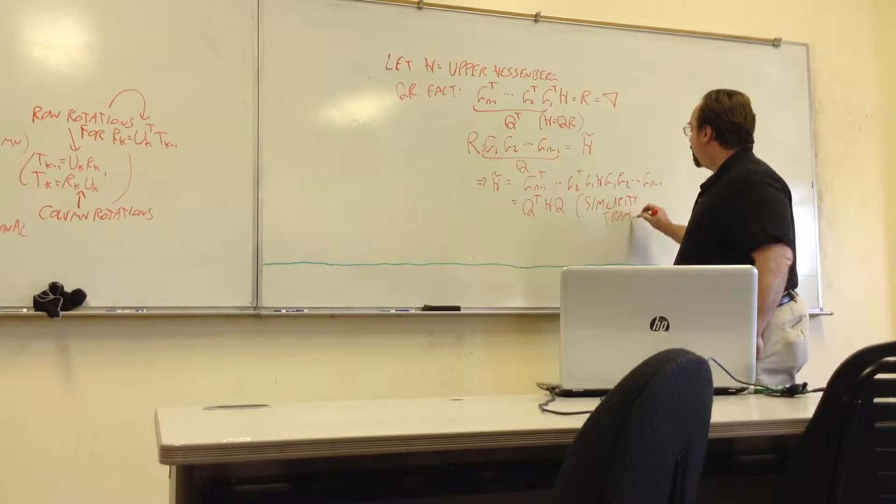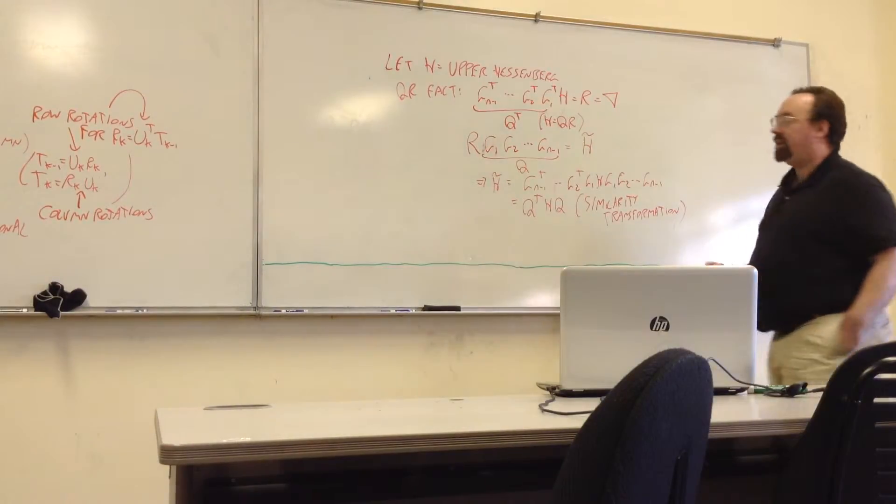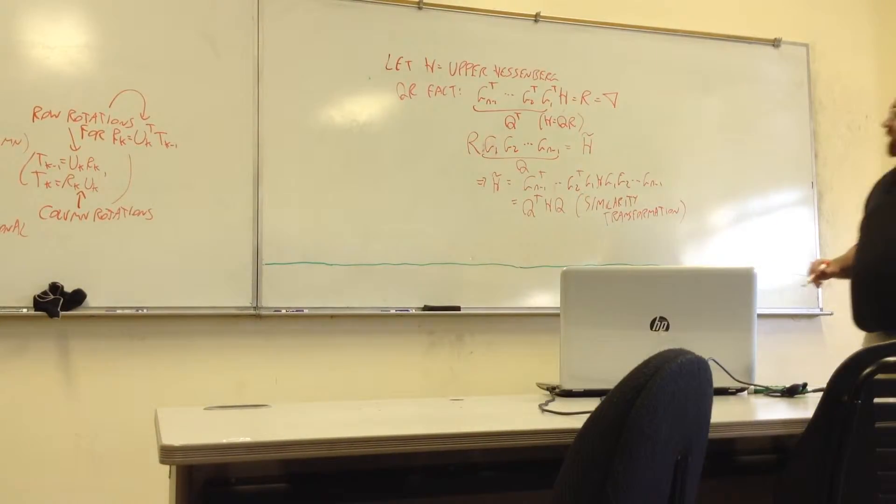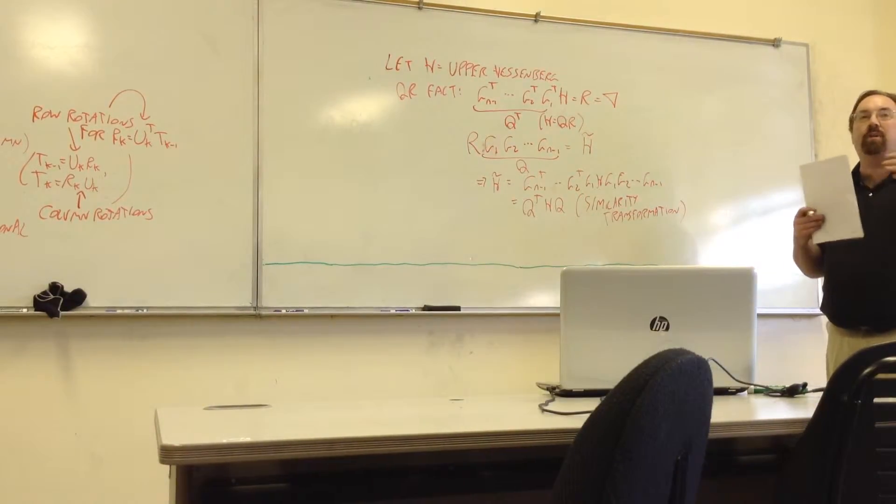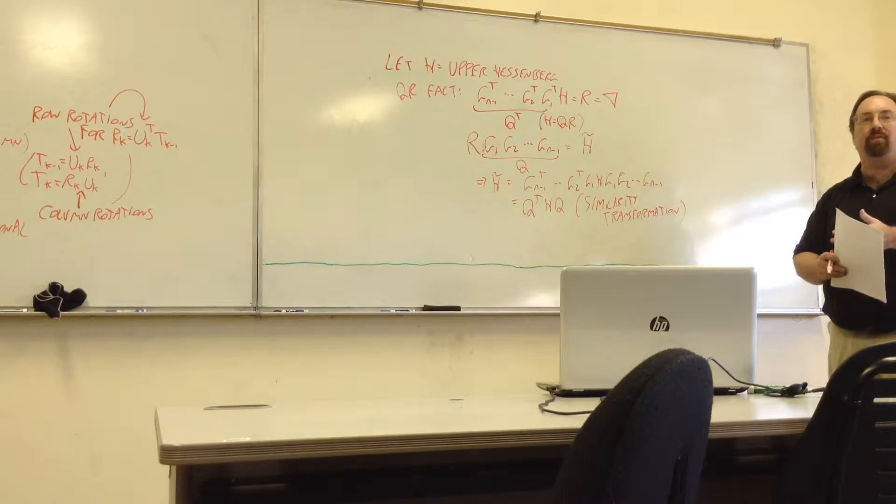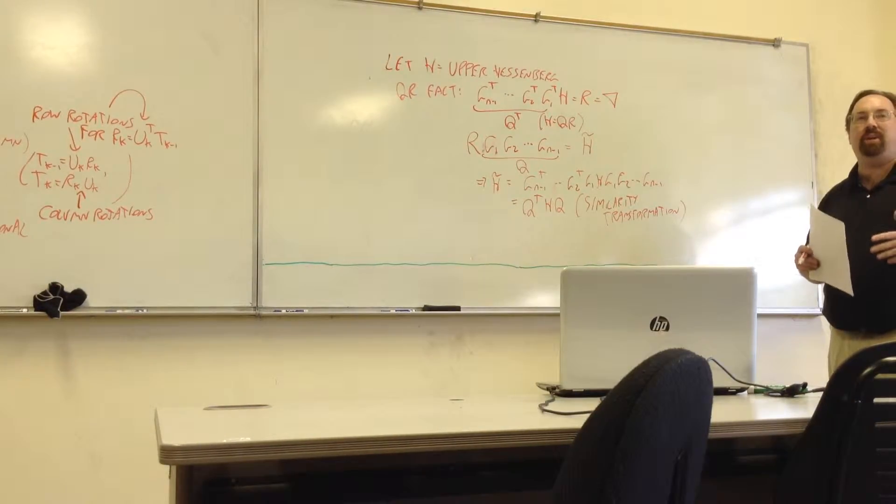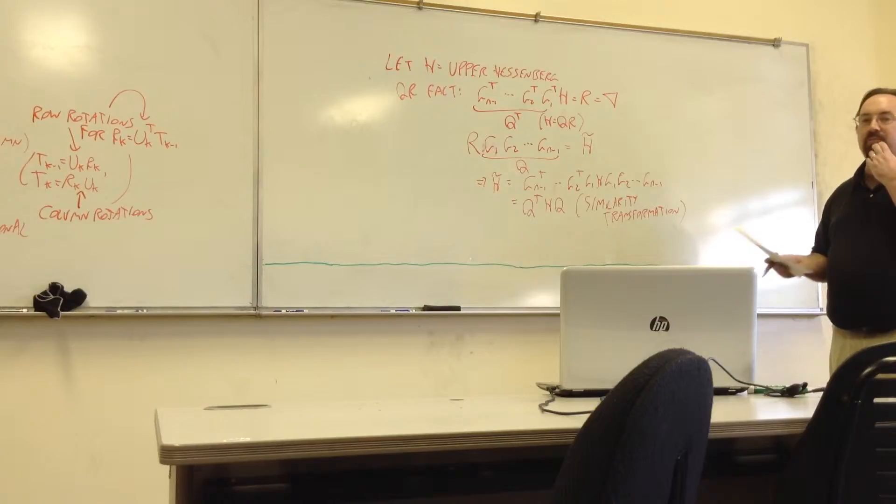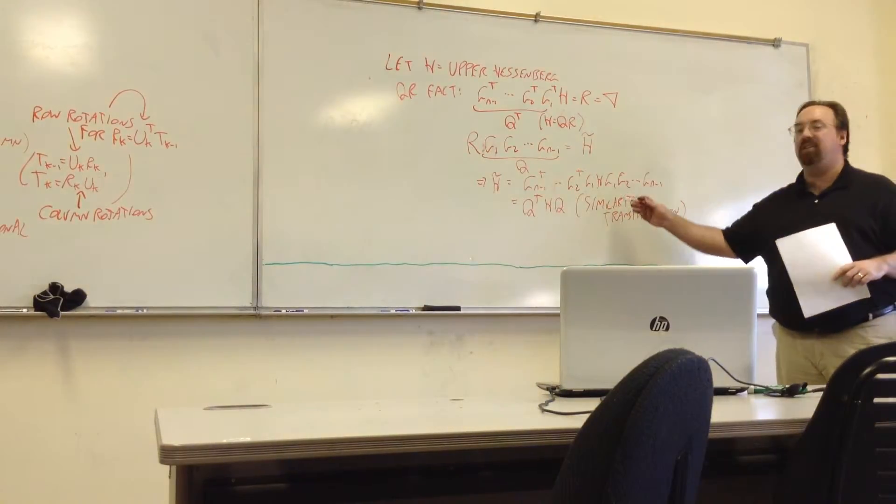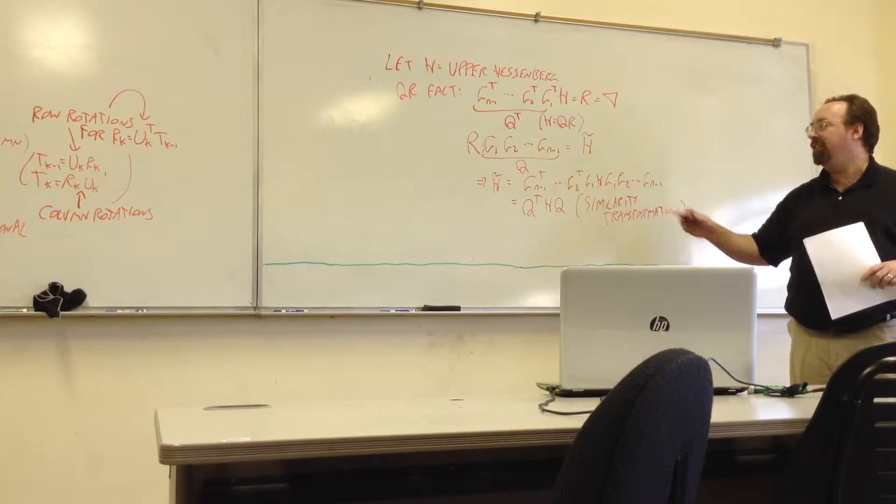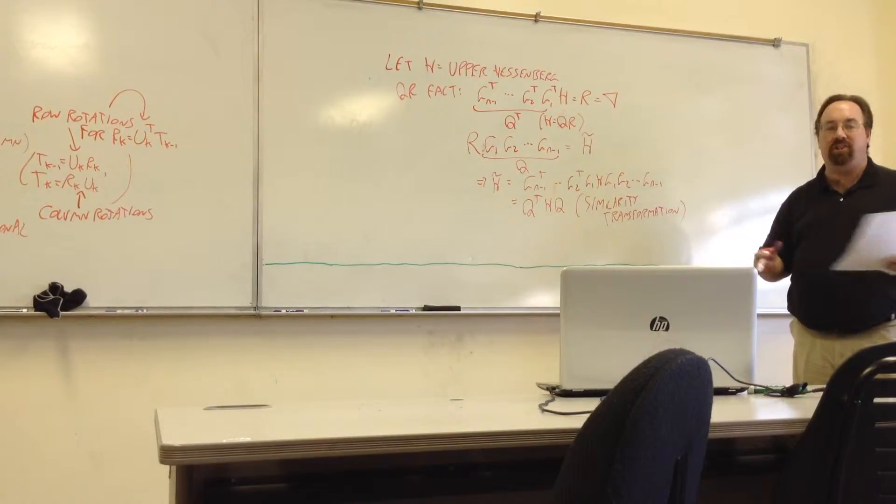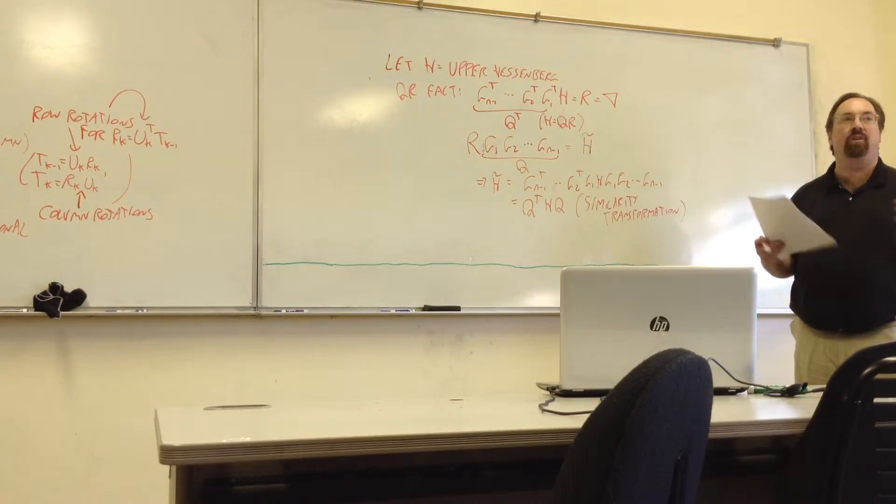So we are certain that H tilde has the same eigenvalues as H. So any time you do this QR factorization to multiply the factors in reverse order, that is definitely going to be a similarity transformation. More than that, it is an orthogonal similarity transformation. It's always of the form Q transpose HQ, where Q is an orthogonal matrix.